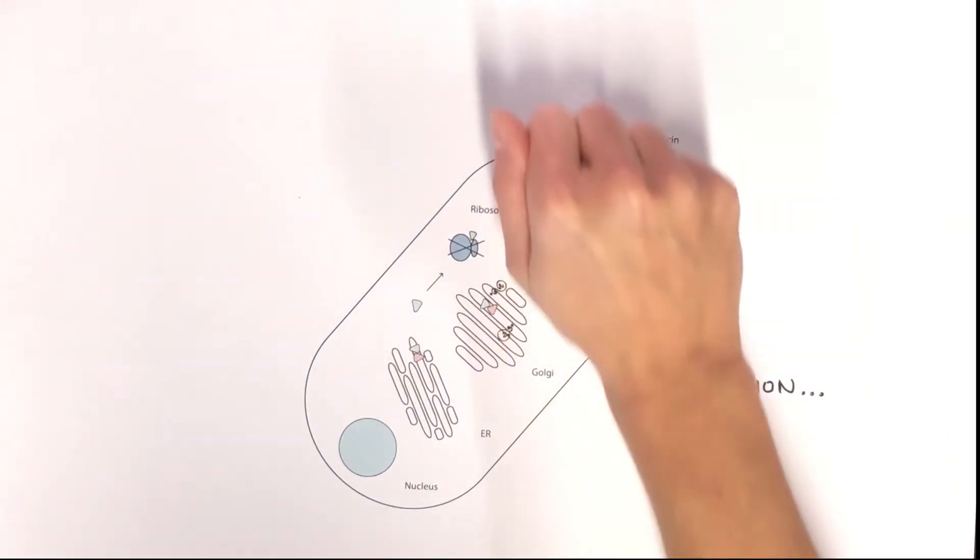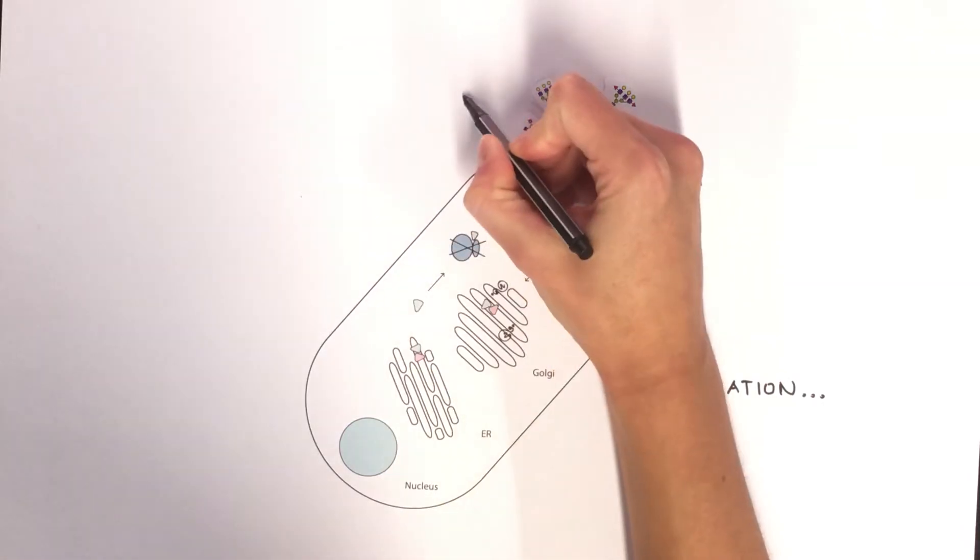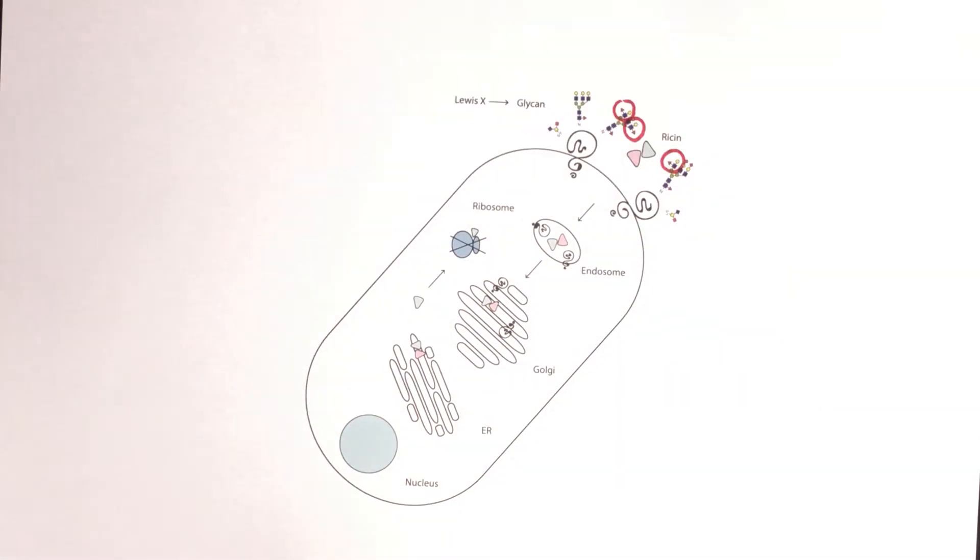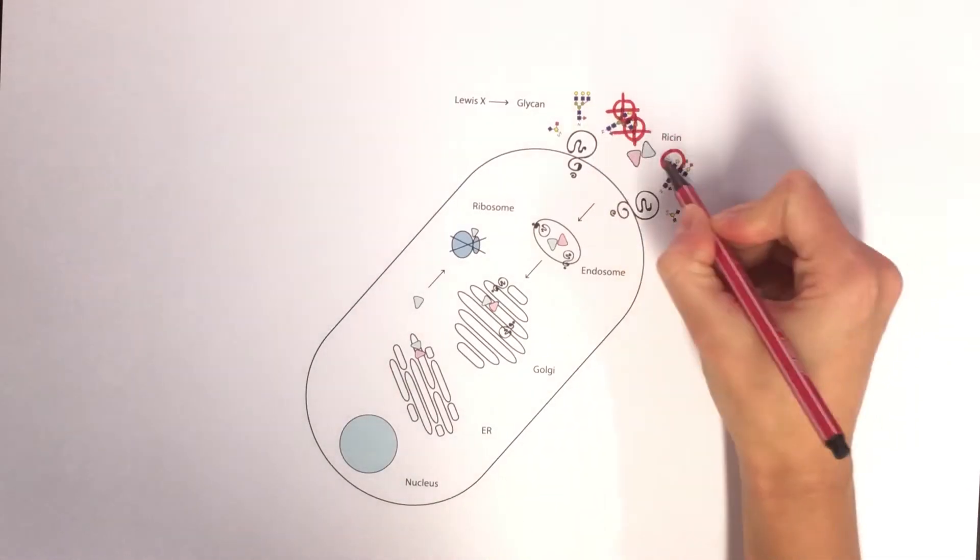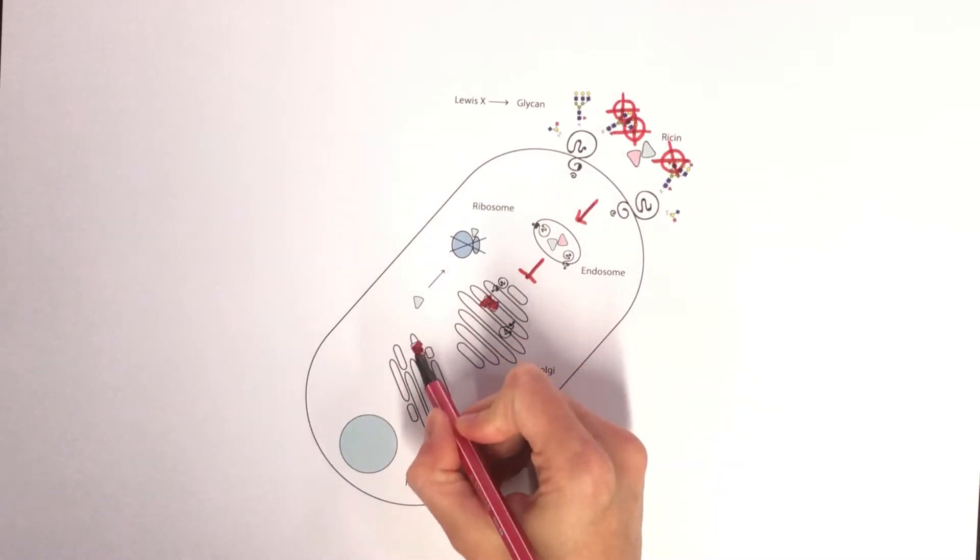We found that Ricin requires a specific sugar epitope, named Lewis-X or SSEA1, to be present on its target cells. Without this glycan, cells gain resistance to the toxin and Ricin transport to the Golgi is specifically inhibited.